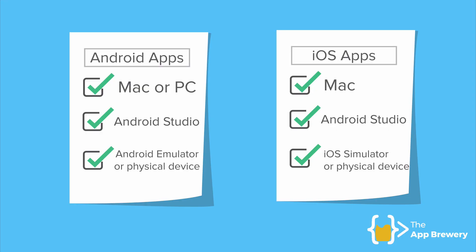As a summary: to develop Android apps with Flutter, you can use a Mac or a PC. You'll need to download Android Studio and you'll need an Android emulator or a physical device. To build iOS apps with Flutter, I recommend having a Mac. Again, we're going to be using Android Studio, and you'll need an iOS simulator or a physical device to test your iOS apps. In the coming lessons, we'll show you step-by-step guidance on how to install Flutter, install Android Studio, and set everything up so you're ready to start development.